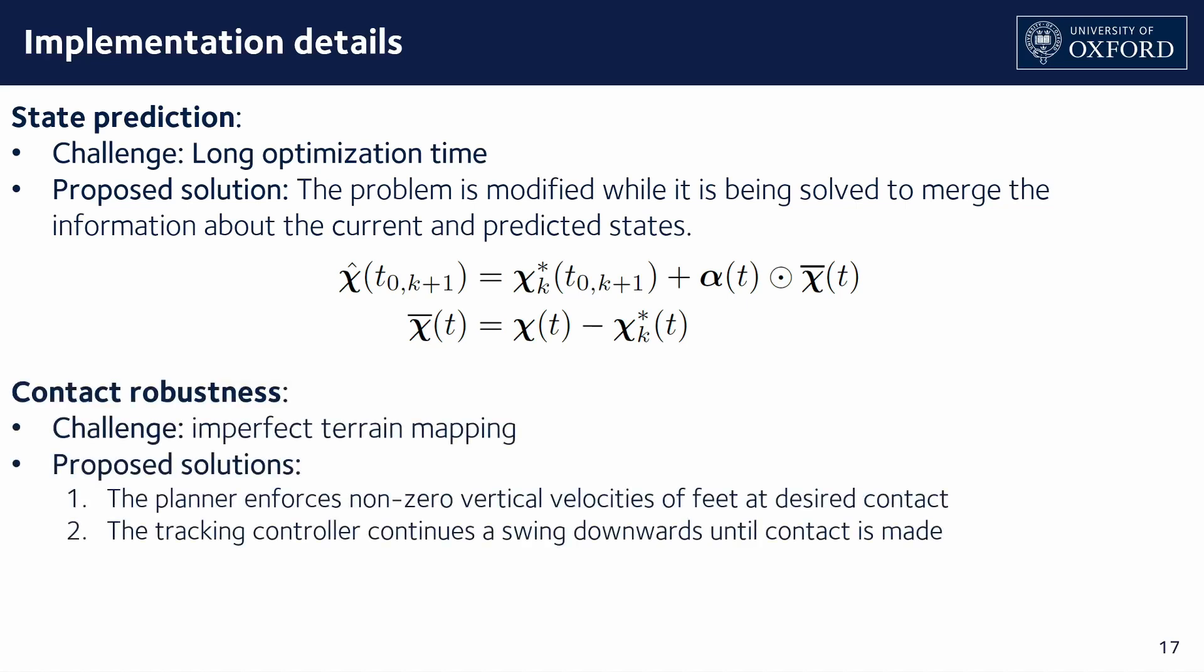The second problem became apparent when dealing with the real elevation map. The imperfect depth information was causing the robot to apply force before a foot was in contact with the terrain. This was dealt with by enforcing non-zero vertical velocities at touchdown and adapting the controller to continue pressing the foot down until contact was detected.